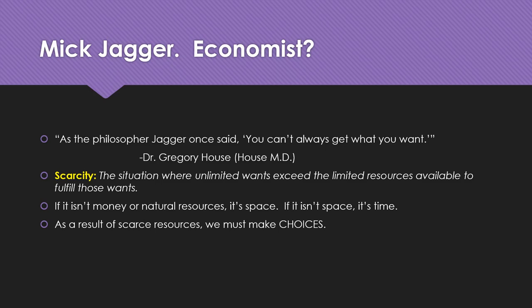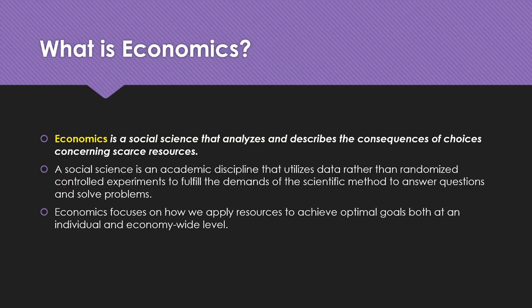When you logged into this course, you might have thought economics is about money. And in a macroeconomics course there's an entire lecture about money. But economics is more broad than that — it's really a thought process, a tool set, and a social science. A social science is an academic discipline that utilizes data rather than randomized controlled experiments like you'd see in a bio class or chemistry lab, and the goal is to fulfill the demands of the scientific method: asking questions, posing hypotheses, solving problems.